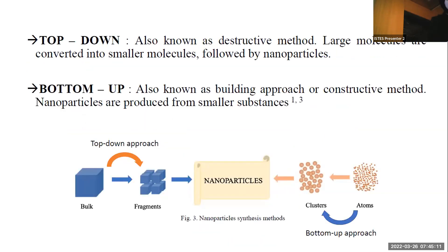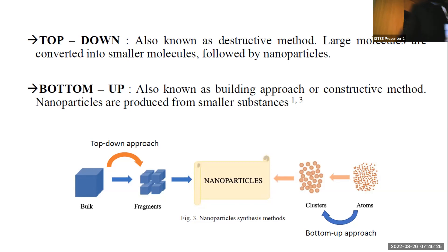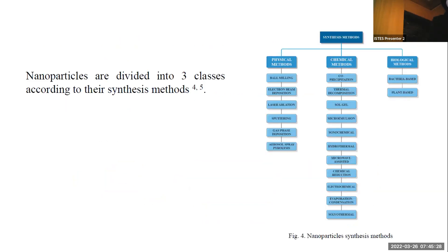Nanoparticles are synthesized by two different approaches. The first approach is top-down, where large molecules are converted into smaller molecules to form nanoparticles. The second approach is bottom-up, where nanoparticles are produced from smaller substances. Nanoparticles are synthesized by three different methods: physical, chemical, and biological methods.